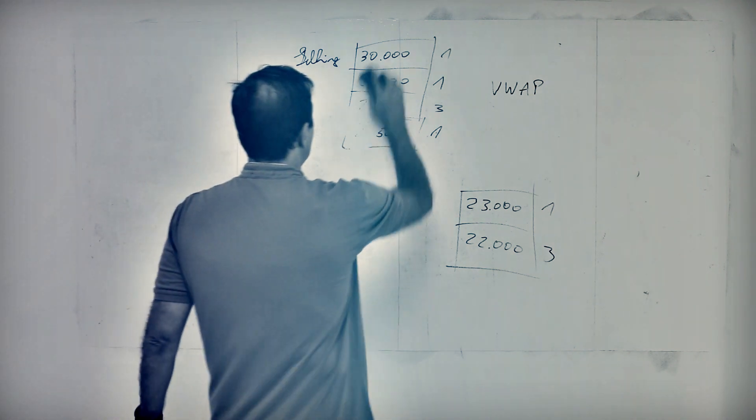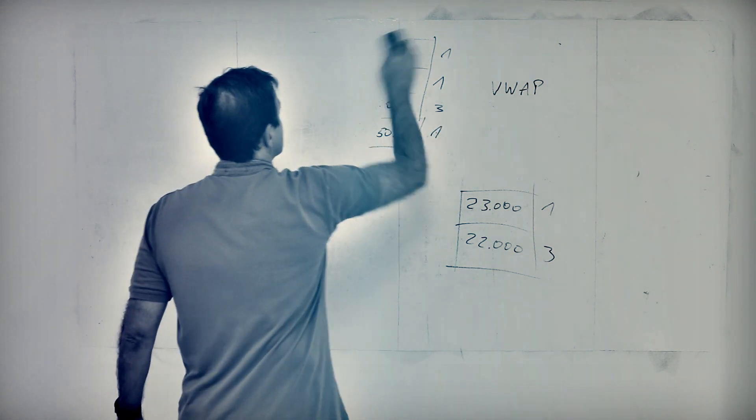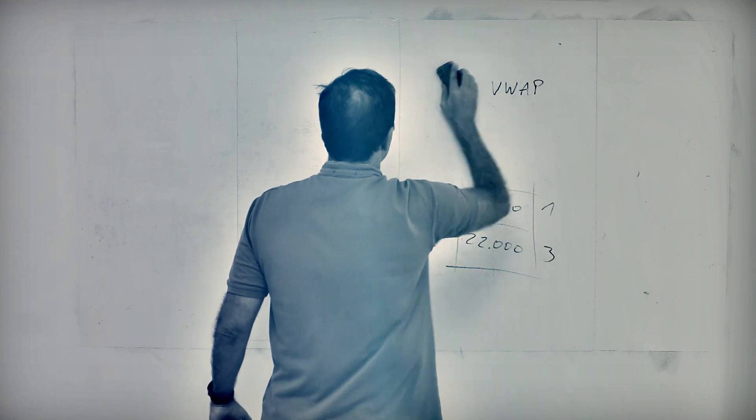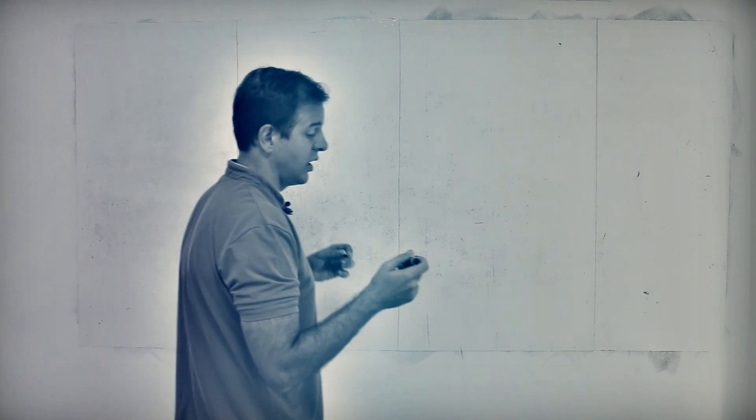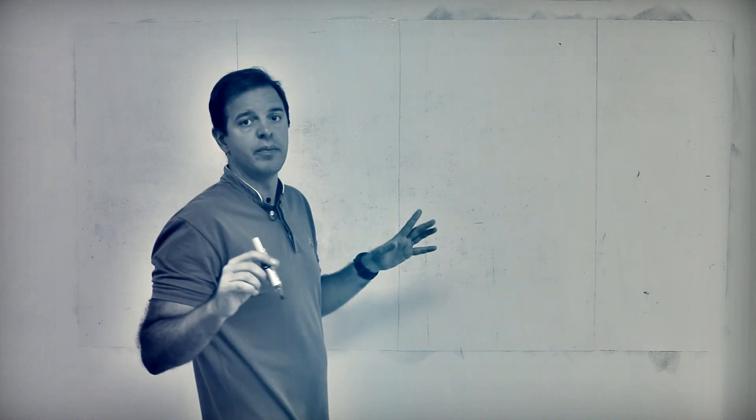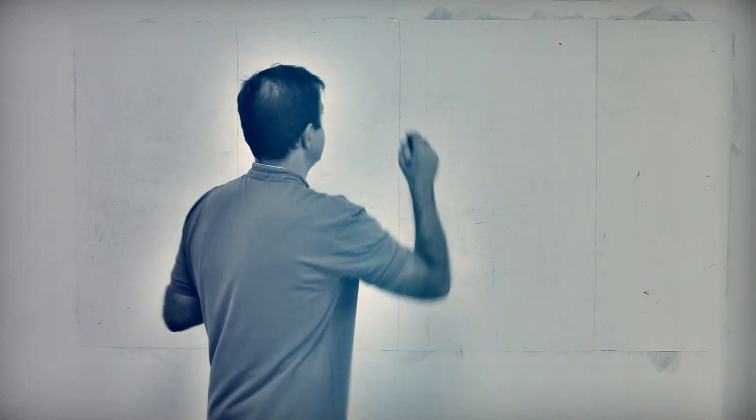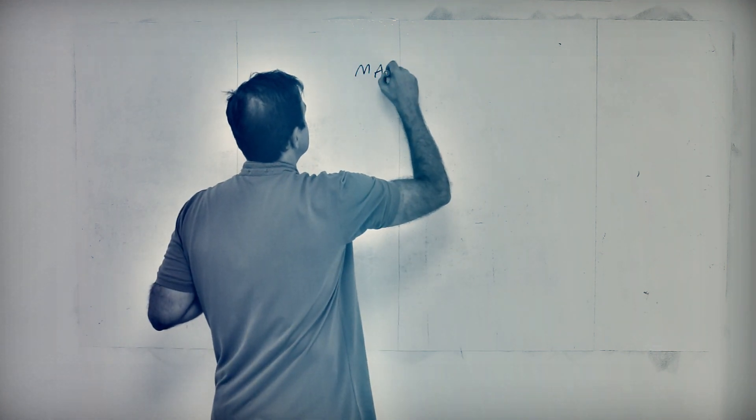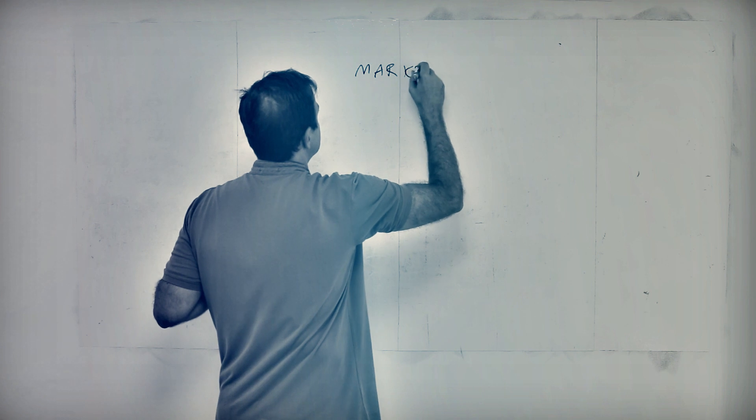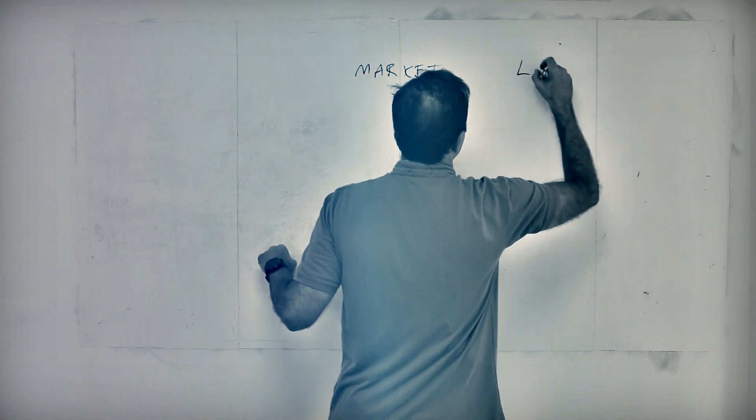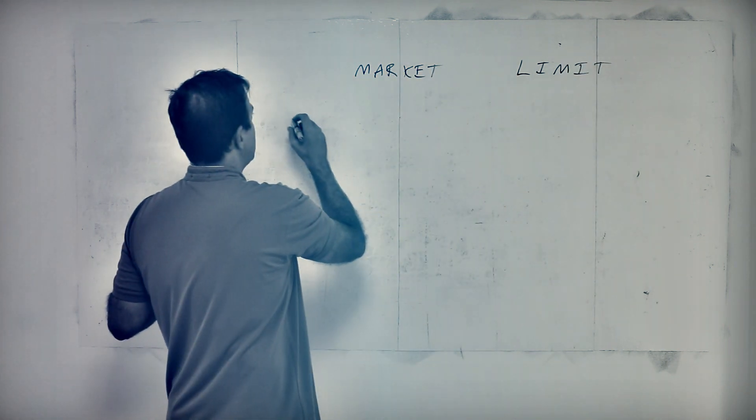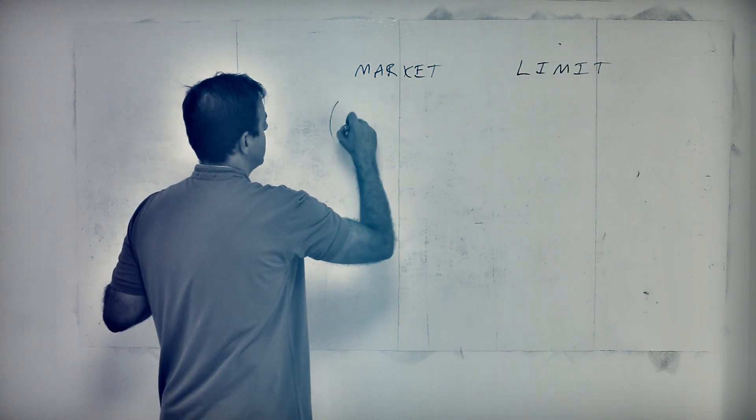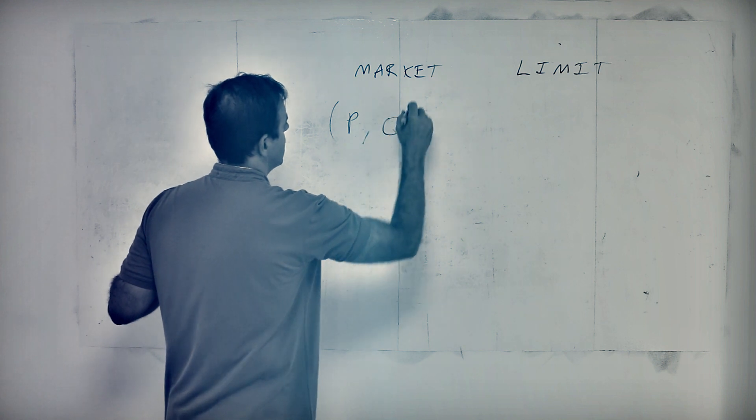This is the volume weighted average price, which basically gives you a spread as a function of the quantity you want to position. Now, when it comes to orders, there's lots of mambo-jambo, but basically two types of orders. There's market orders, and there's limit orders. And both have two elements. One is price, the other one is quantity.